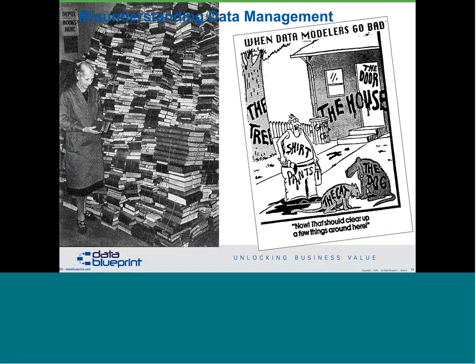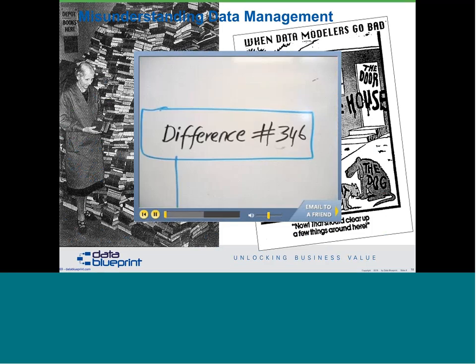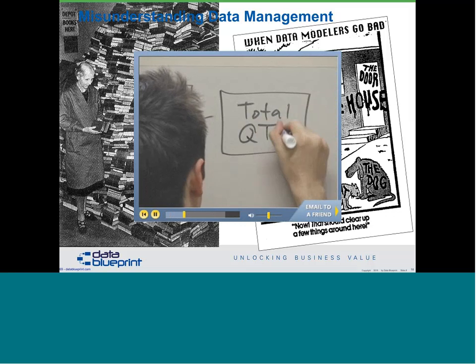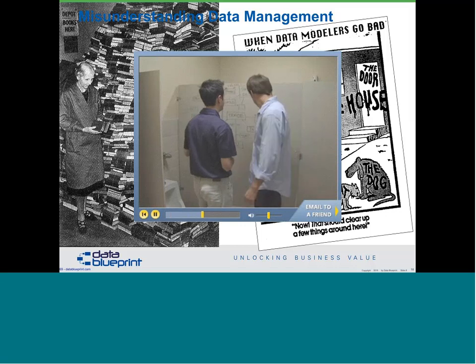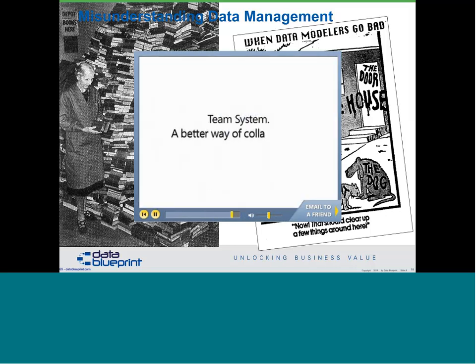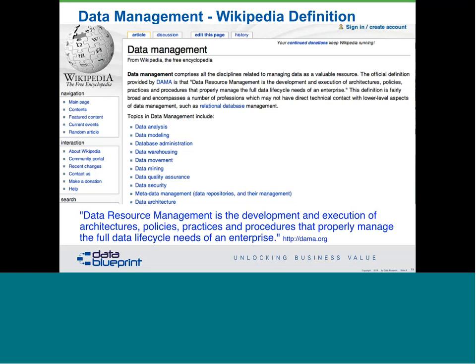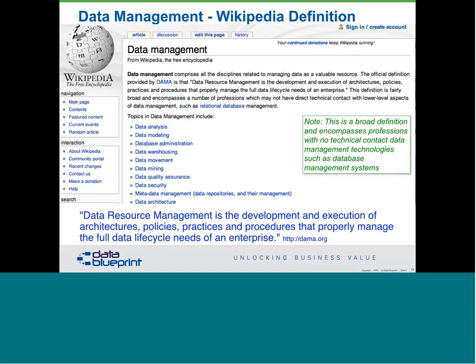This is the Wikipedia definition of data management from DEMA: the development and execution of architectures, policies, practices, procedures that properly manage the full data lifecycle needs of the enterprise. That's nice, but people often aren't sure what that means. It's a broad definition with no real technical content — we're talking about a business set of practices. The reason this is problematic is because when we teach people in schools how to do this, they usually get one course on how to build a database. If the only tool you know how to use is a hammer, every problem tends to look like a nail.